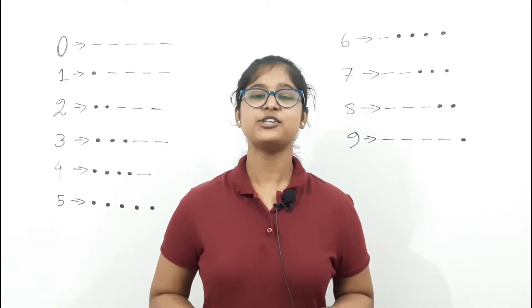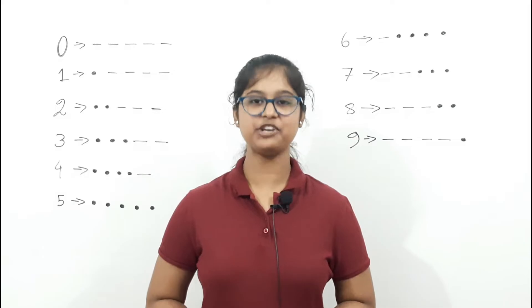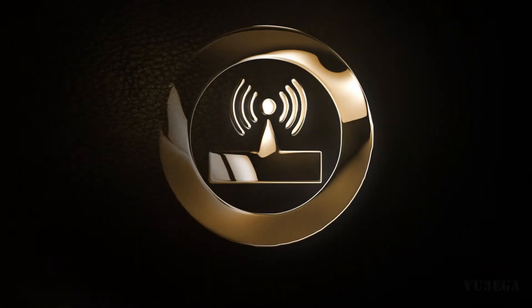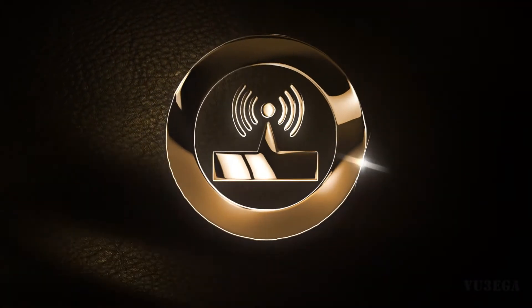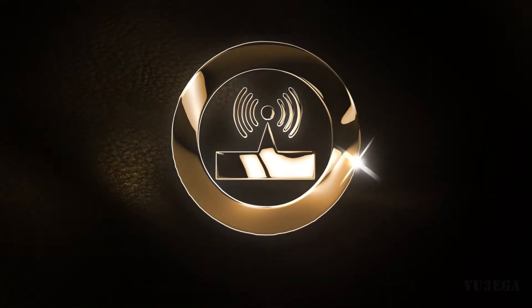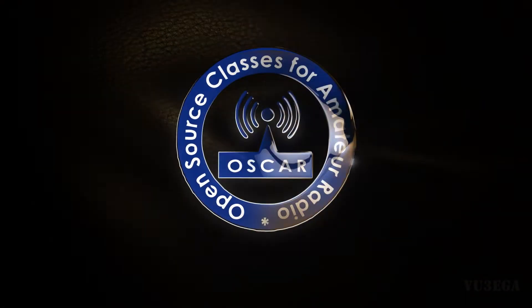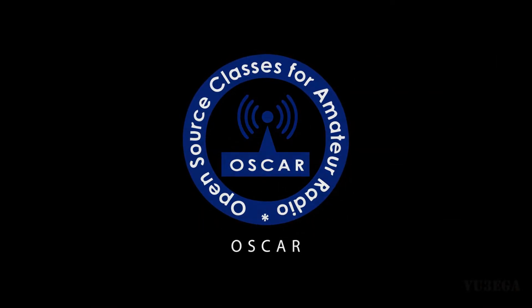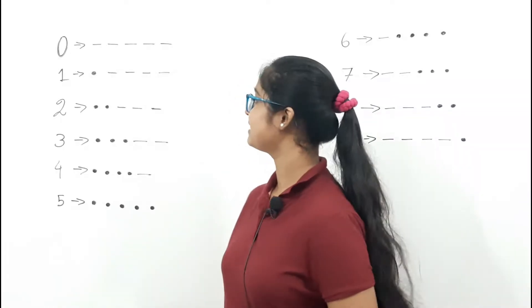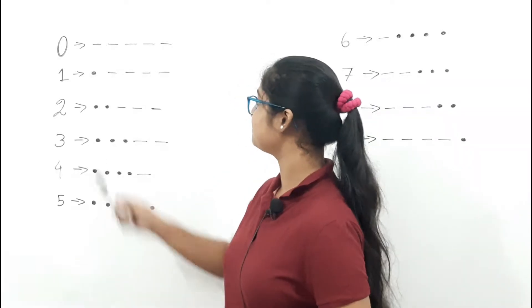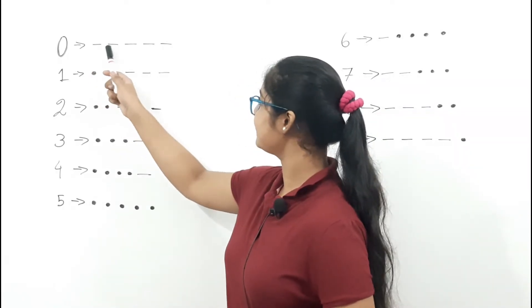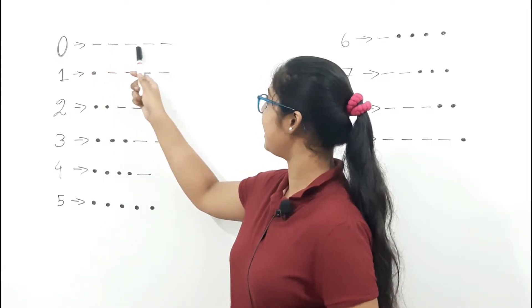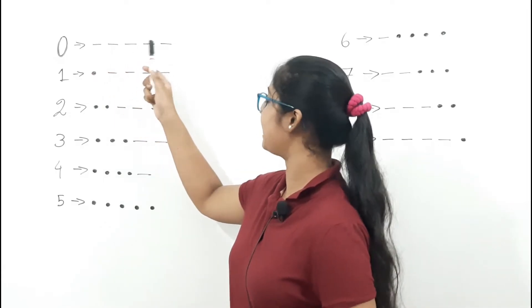So let's learn Morse code 0 to 9. Zero: D, DAH DAH DAH DAH DAH.